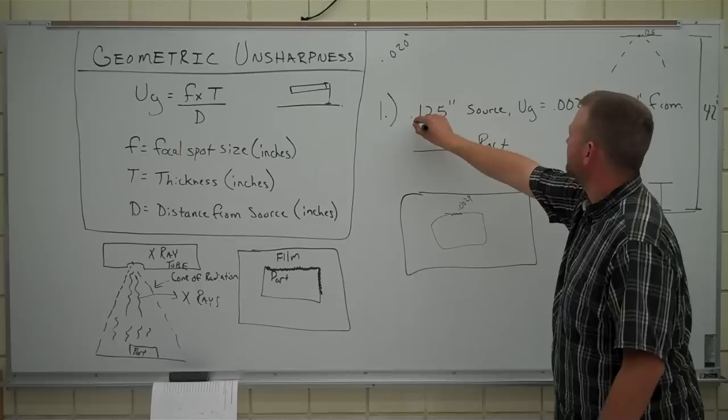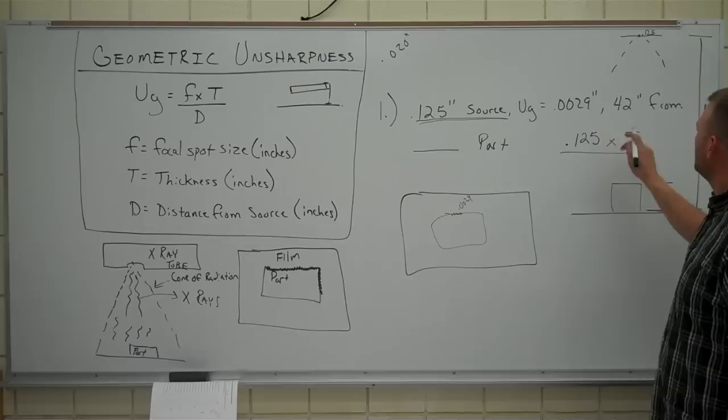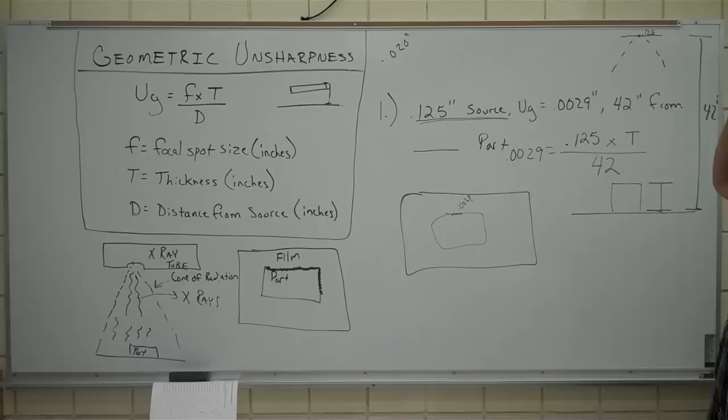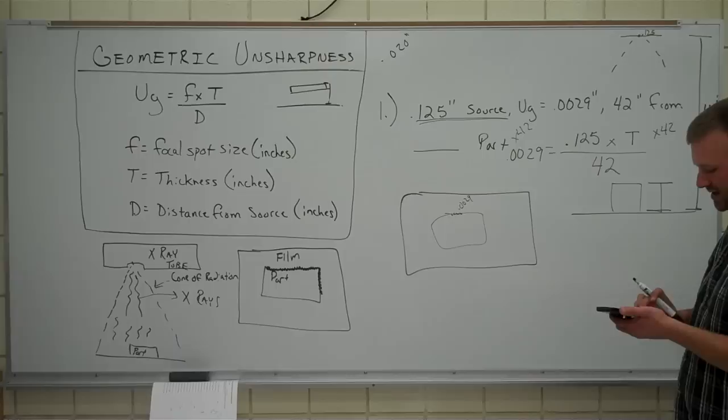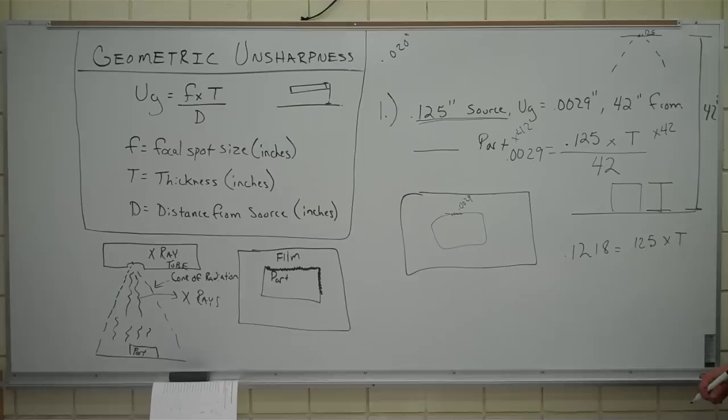Here's our focal spot size. The size of the source, .125. Since everything's in inches, I'm not going to put anything up there. We're looking for the thickness. We don't know it. But we do know that we're 42 inches from that surface. And our geometric unsharpness is .0029. So, let's work that out here. We've got to get t all by himself. So we multiply out 42. 42 times .0029 equals .1218. Now that equals .125 times t. I'll give you a second to kind of take that in.